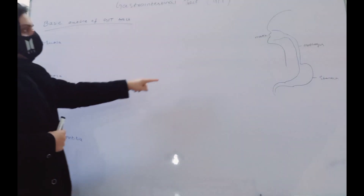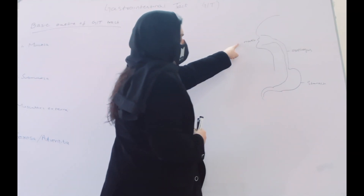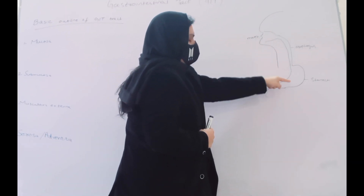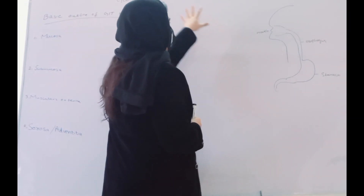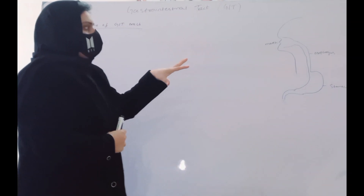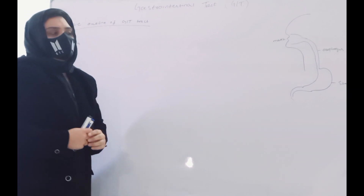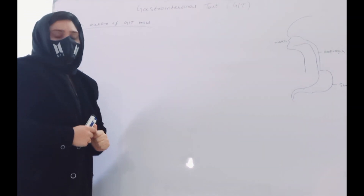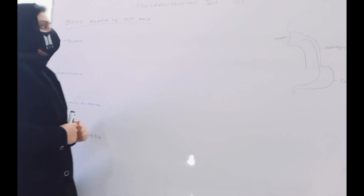The GIT starts from the very beginning — from the mouth, then the esophagus, stomach, and then the intestines. We also study the associated glands beside these structures, which are the liver, pancreas, and the salivary glands.